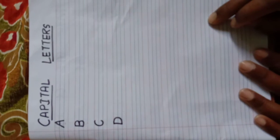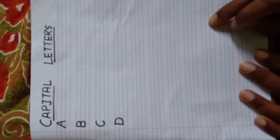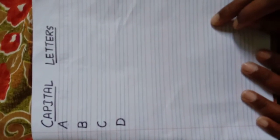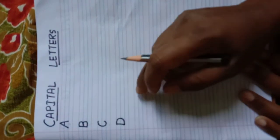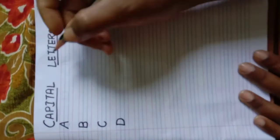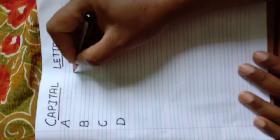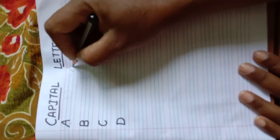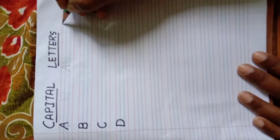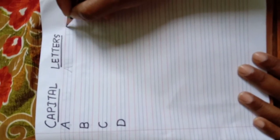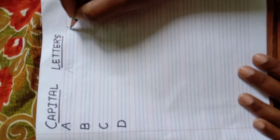So students, see how I am writing. Our first letter is A. Now I will write A. A for apple. Once again, A for apple.